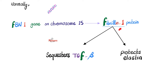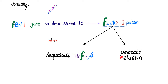Fibrillin-1 also normally protects elastin. But in Marfan syndrome, since this protein is defective, TGF-beta runs all over the place — elevated serum TGF-beta — and elastin is unprotected. That's why it's called a connective tissue disorder, causing joint hyperlaxity and aortic root dilatation with cystic medial necrosis.